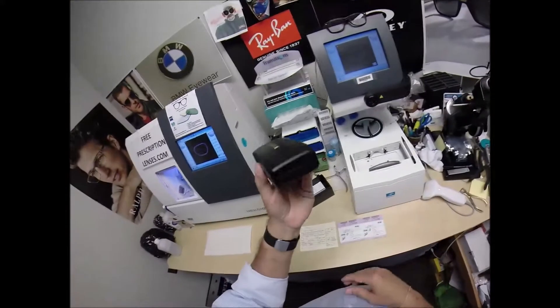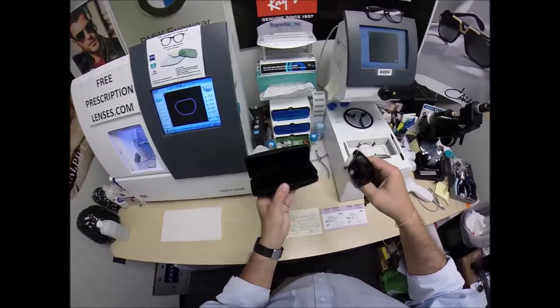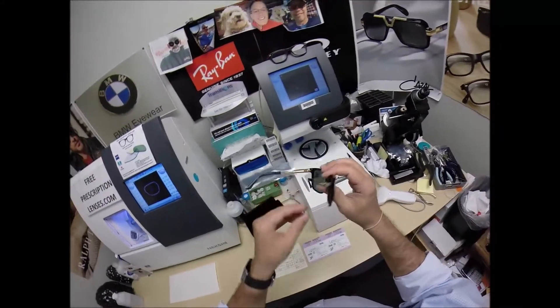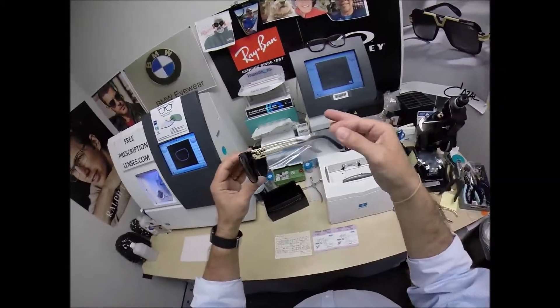But the star of the show, the main attraction is hiding inside this Italian leather Versace case, and here we are. We got the frame. Now, this is a sunglass. I'm going to take the dark lenses out and put the clear lenses in there.